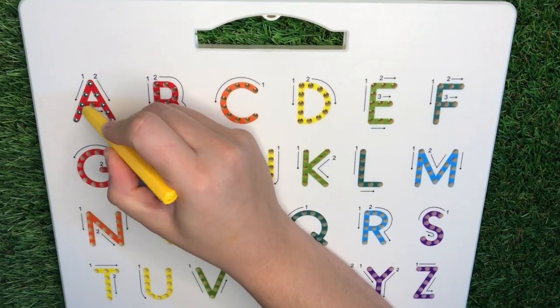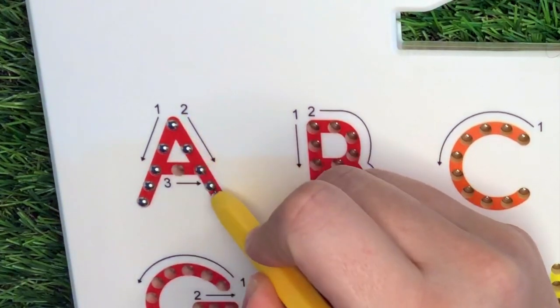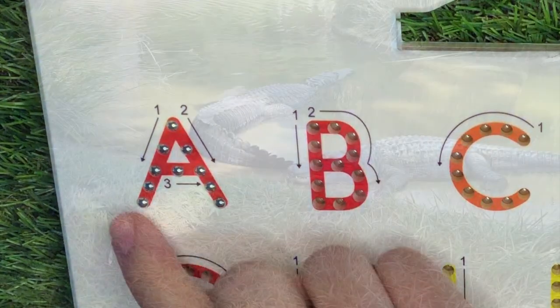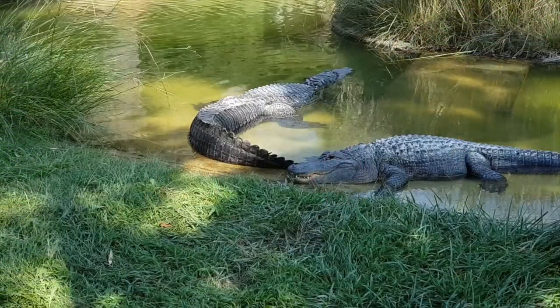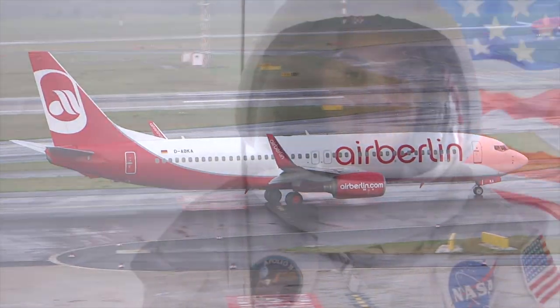Letter A. Slant up, slant down, and across. A is for alligator, airplane, and astronaut.